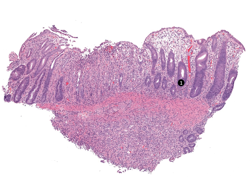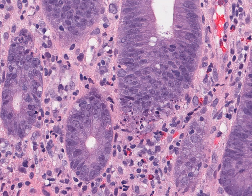The diagnosis of graft-versus-host disease requires the presence of crypt apoptosis. Here, apoptotic bodies are seen in almost every crypt.